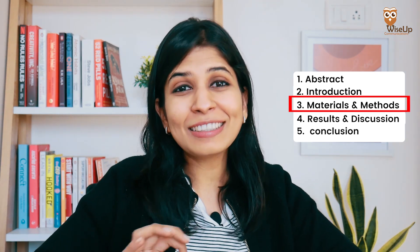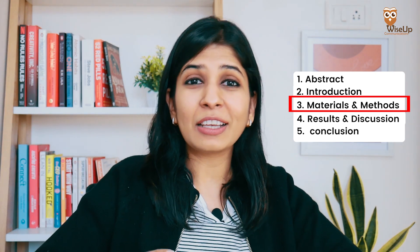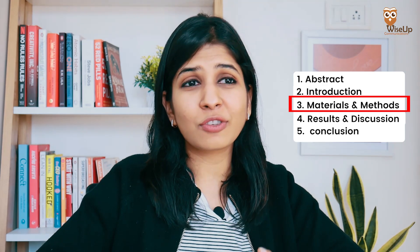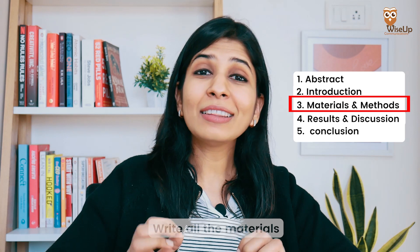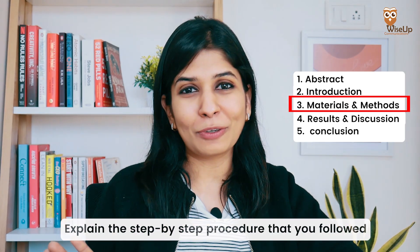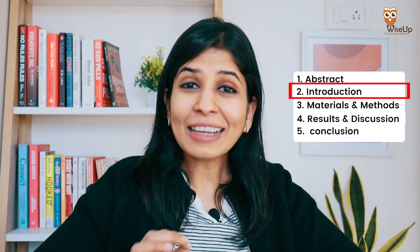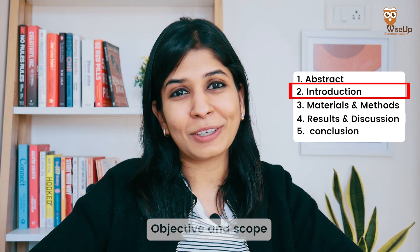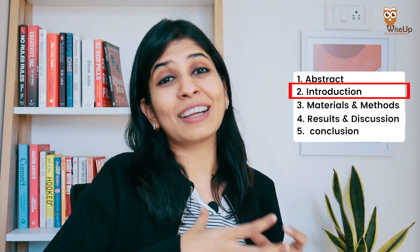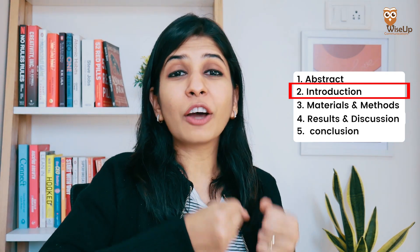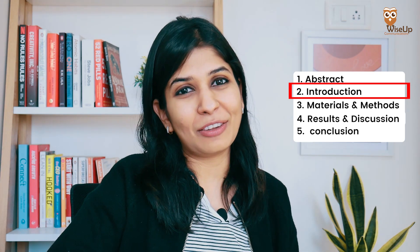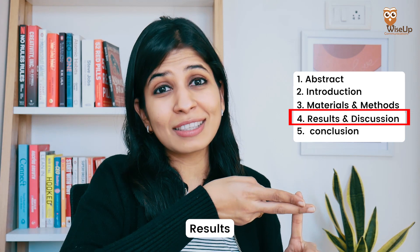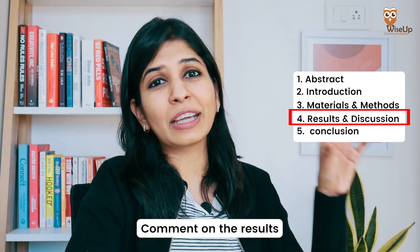The easiest section to start writing is materials and methods, where you talk about the step-by-step process you followed to arrive at your results — all materials used in detail and the procedure followed. After that, write the introduction section, where you share the motivation of your study, the research gap, and the objective and scope of your work. The more literature you cite in the introduction, the better, as it shows you know your research area well. Then write the results and discussion section, where you share your data and results and link them to the research objective.